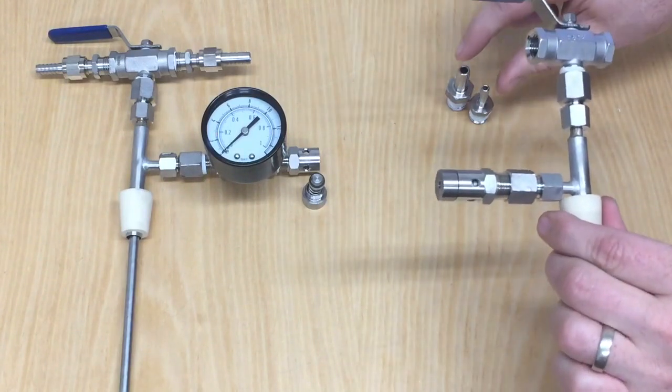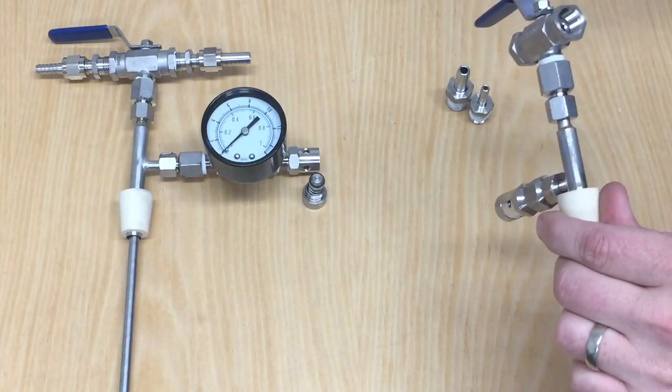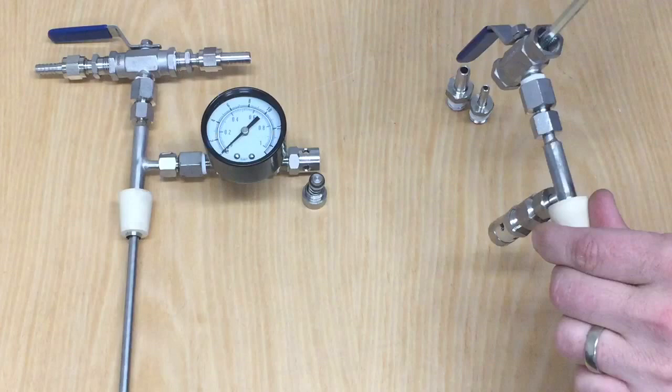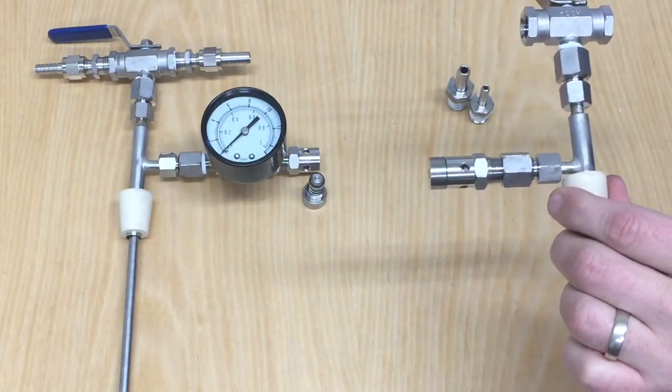This is easily fixed by taking off the barbs, looking in both sides and one will have a hex pattern. Take a hex key, put it in, tighten it gently until it firms up and that should fix it.